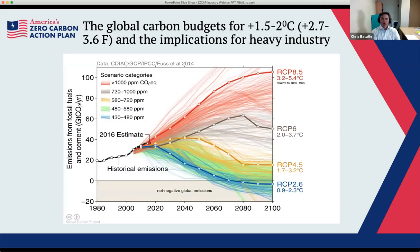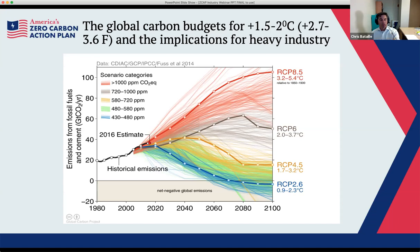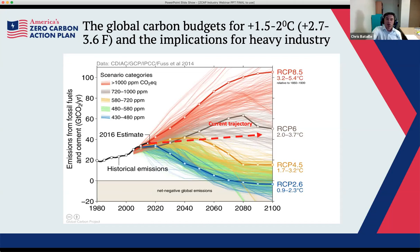Back to the basics: the global carbon budgets for 1.5°C to 2°C and implications for heavy industry. This graph shows global CO₂ emissions since 1980, with gigatons of carbon on the left-hand axis, rising from 20 in 1980 to over 40 by 2020. Had we carried on the path from about 1985 to 2010, we would have been on that red line — effectively a blade-runner-like world. However, current policies and transformative change in the electricity sector have pulled that line down to about plus 3°C.